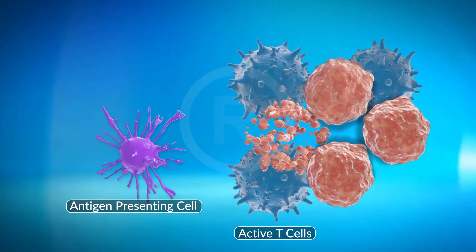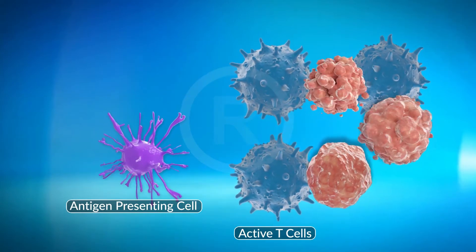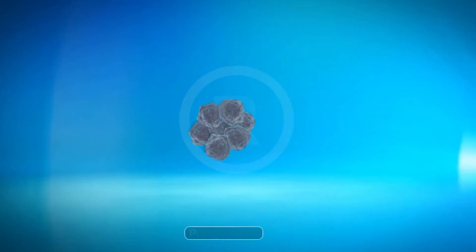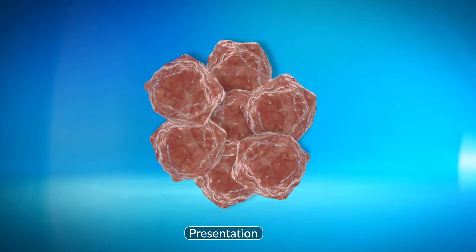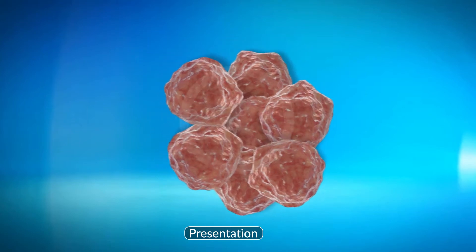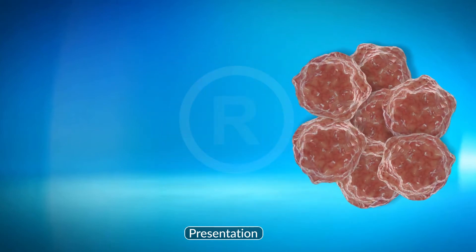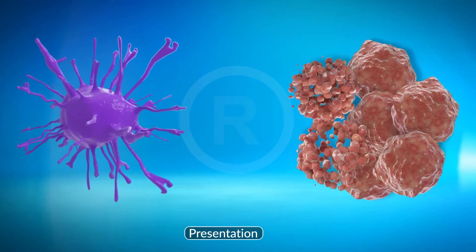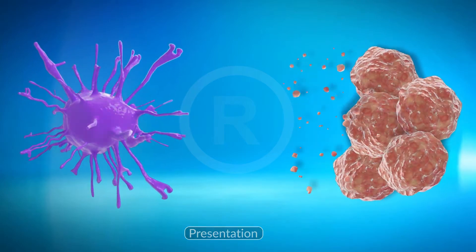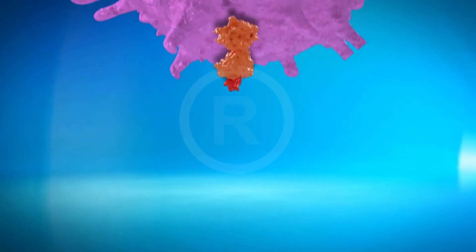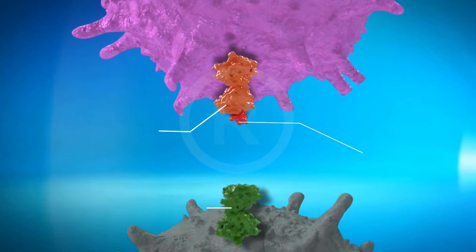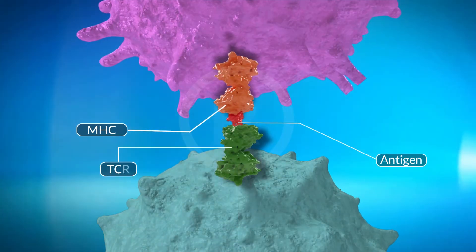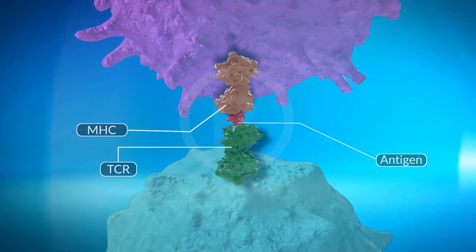The immune response elicited against tumor cells in entirety involves three phases. The first phase, also referred to as the presentation, involves the identification of tumor cells by the innate immune system and their rapid elimination from the host system. The dying tumor cells release tumor-specific antigens that activate cytotoxic T cells that belong to the adaptive immune system.